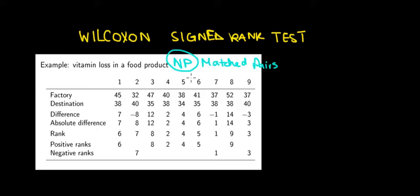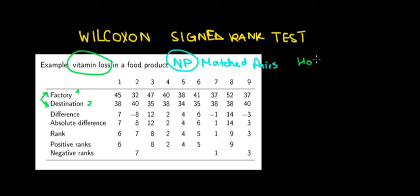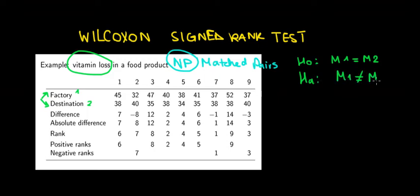In this case, we have matched pairs because we have food products in two places — the same product in two places, the same sample in two different settings: at the factory and at the destination, probably the shop where they sell it. We want to know whether the median — the middle value of vitamin loss — is the same at the factory and at the destination. So what we are testing is whether the difference in medians is zero, meaning the median of the first distribution equals the median of the second. Under the alternative hypothesis, they are different.